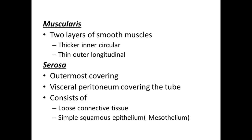The muscularis consists of two layers of smooth muscle: a thicker inner circular layer and a thinner outer longitudinal layer. The serosa is the peritoneum, composed of loose connective tissue covered by simple squamous epithelium called mesothelium.